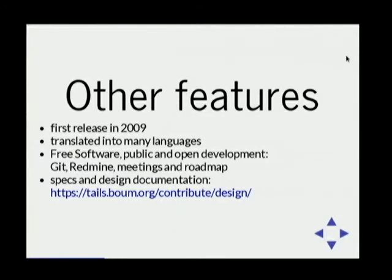The first public Tails release was put out in 2009, so it's five years now. The software we ship is translated in many languages. It's free software with public and open development — we have git, Redmine, mailing lists, monthly public meetings, all these things. And we try to document quite well what we are trying to do and how, thanks to our design documentation.